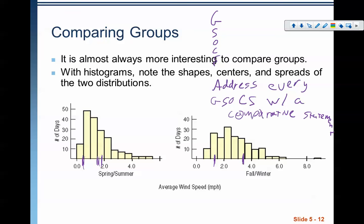And the way that they're scoring it is they're looking for your GSOCs, right? You have to address all of them with comparative statements, otherwise you are losing points for that particular section. So every GSOC needs a comparative statement. The gaps in this versus the gaps in this. The shape in this versus the shape in this. The outliers, the center, and the spread. It's a long bit of writing that you have to do.